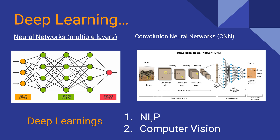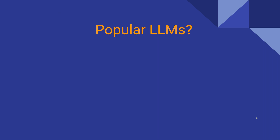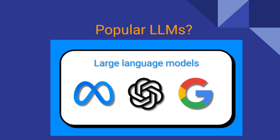Natural Language Processing is a major specialization. Large Language Models are being developed by companies such as Facebook, OpenAI (ChatGPT), Google (PaLM, Gemini), and others. LLMs represent one of the biggest developments in AI.